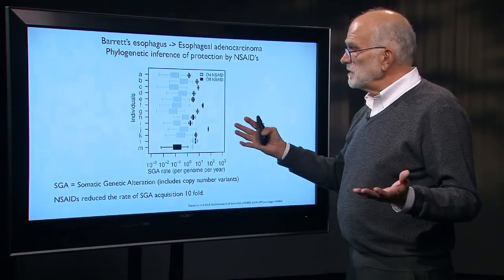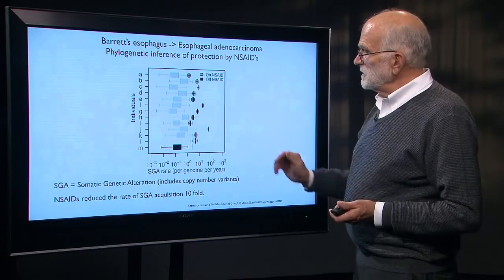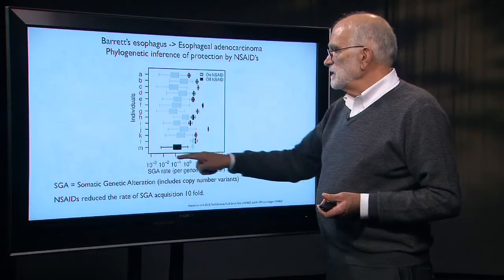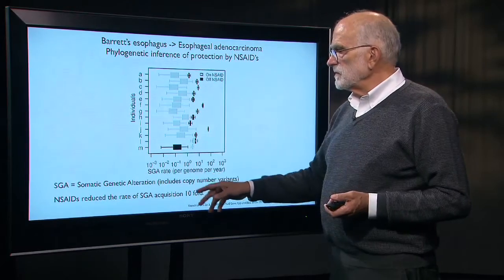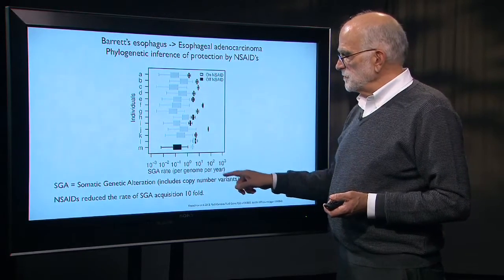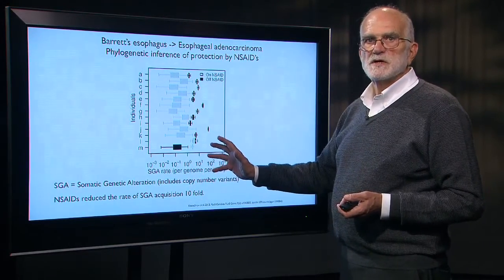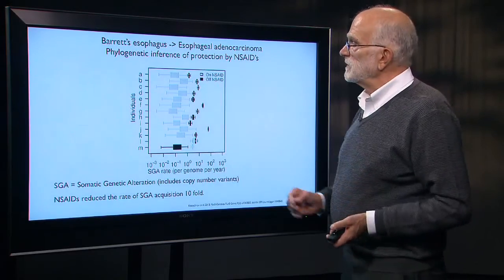If we take that same data and we present it another way, this is now on the x-axis the log of the somatic genetic alteration rate, so that you can think of that as the mutation rate. It includes copy number variants. These are the individuals in rows here.